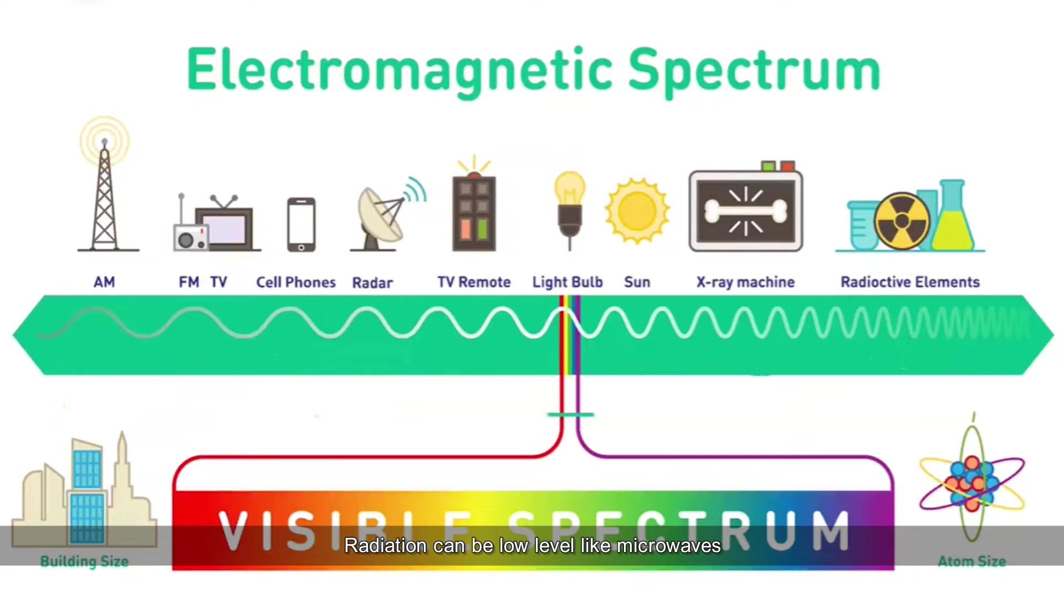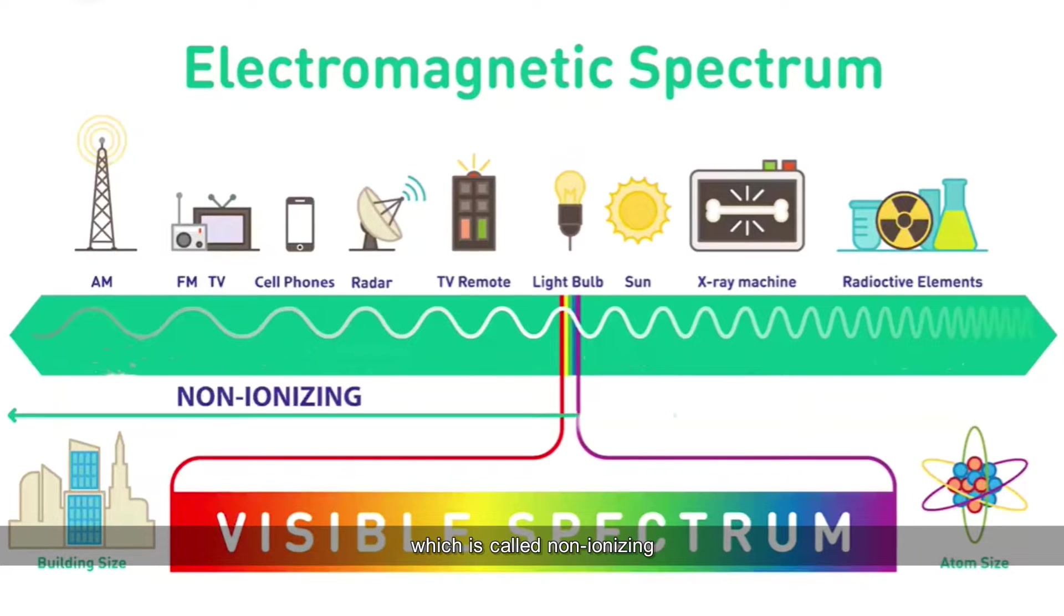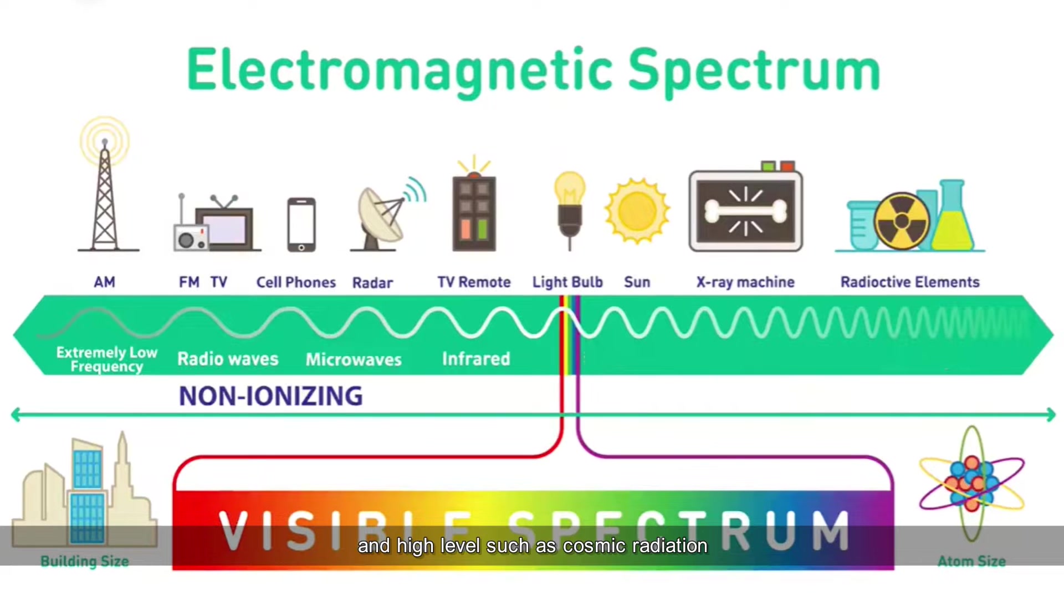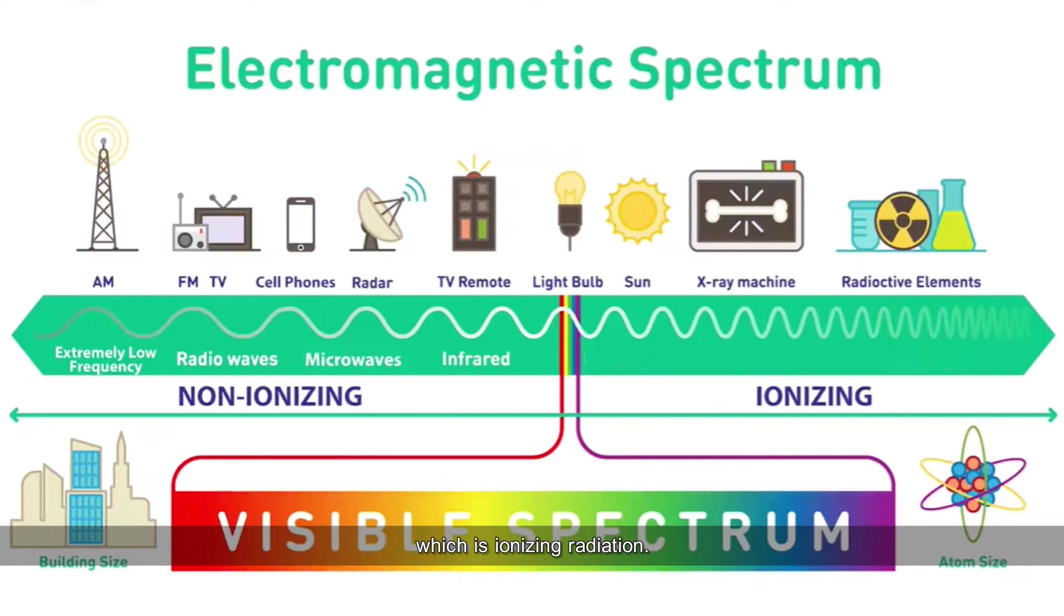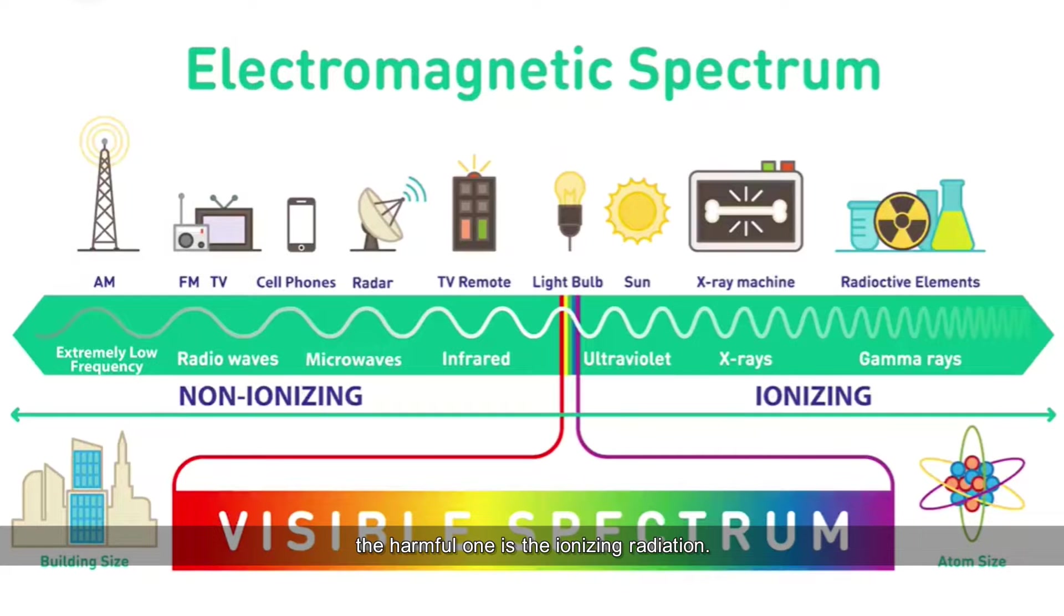Radiation can be low-level like microwaves which is called non-ionizing, and high-level such as cosmic radiation which is ionizing radiation. The harmful one is the ionizing radiation.